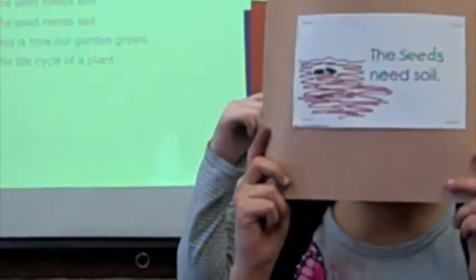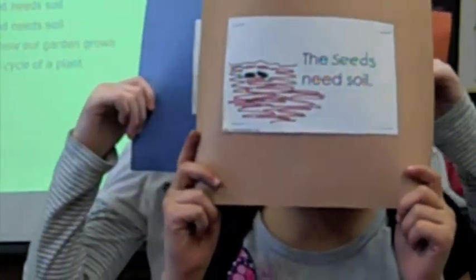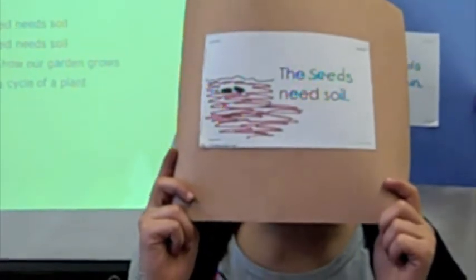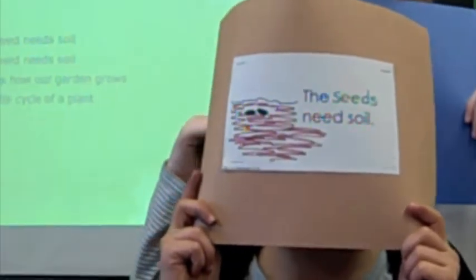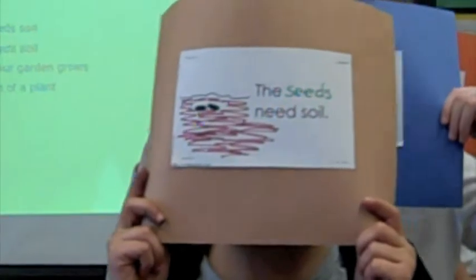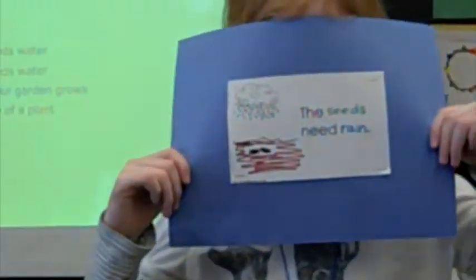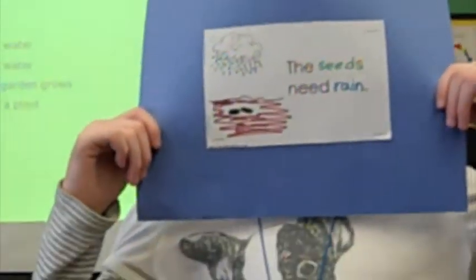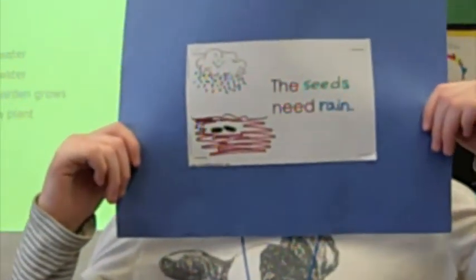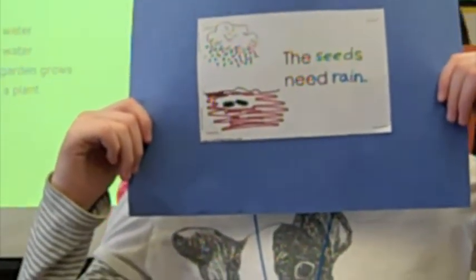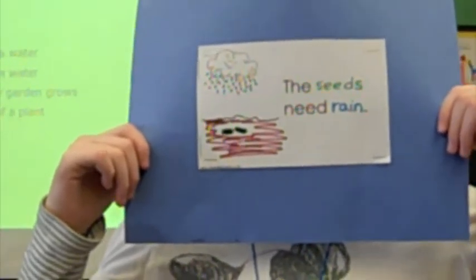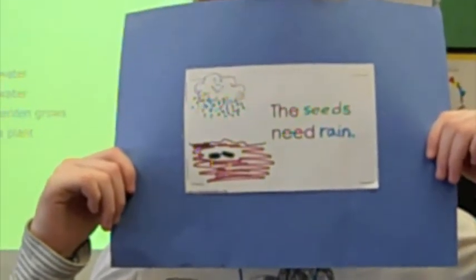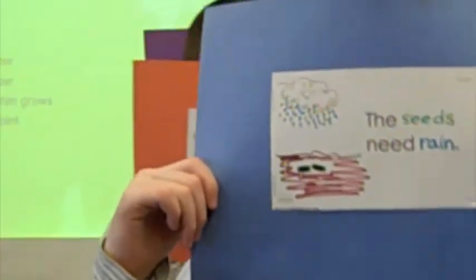The seed needs soil, the seed needs soil. This is how my garden grows, the life cycle of a plant. The seed needs water, the seed needs water. This is how my garden grows, the life cycle of a plant.